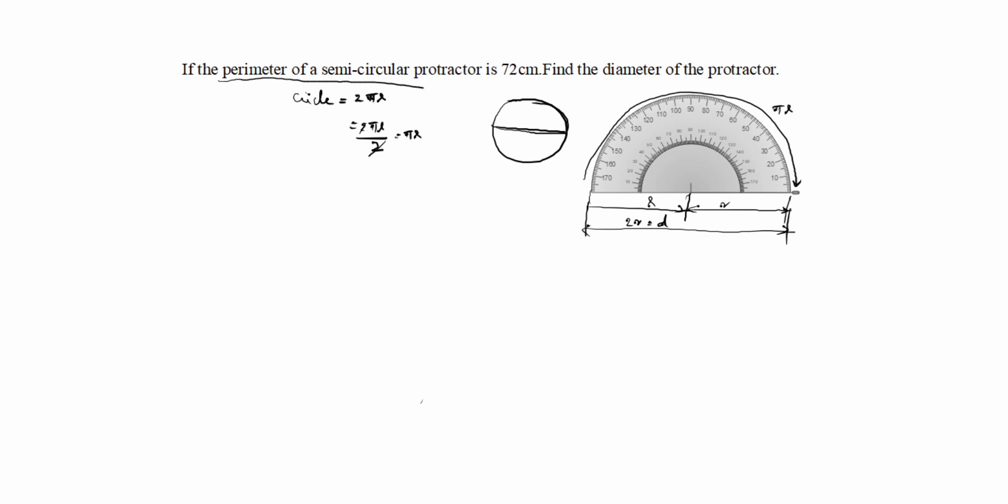Perimeter of semicircular protractor formula is πr plus 2r. You see here, πr plus 2r equal to given is 72 centimeter.